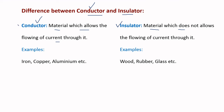Examples of conductors include iron, copper, aluminum, etc. — all materials which allow the flowing of current. Examples of insulators include wood, rubber, glass, etc. These are good examples of insulators which do not allow the flowing of current.